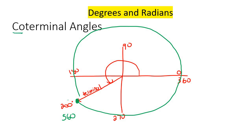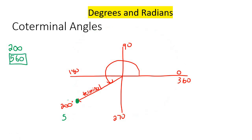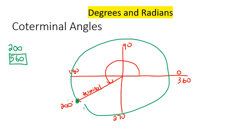The word coterminal just means they share the same terminal side. So we could say that if we had 200, then 560 is a coterminal angle. We could also subtract 360 degrees — go all the way back around — and you would end up at exactly the same place. Your angle would be negative 160 because 200 take away 360 is negative 160. So that's another coterminal angle.